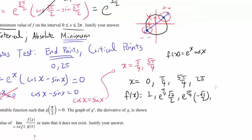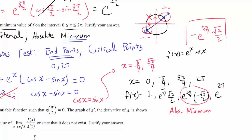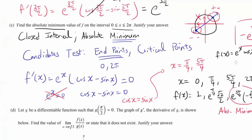Finally, at x equals 2 pi: e to the 2 pi times cosine of 2 pi, which is 1. Every single one of these values is positive except the one at 5 pi over 4, which is negative. So the absolute minimum is negative e to the 5 pi over 4 times square root of 2 over 2, occurring at x equals 5 pi over 4.